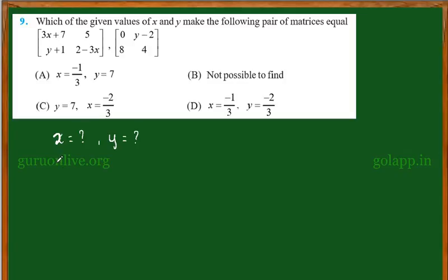So the given thing is the two matrices are equal. That is, we can write the given matrices as: 3X plus 7, Y plus 1, 5, 2 minus 3X is equal to 0, Y minus 2, 8, 4.